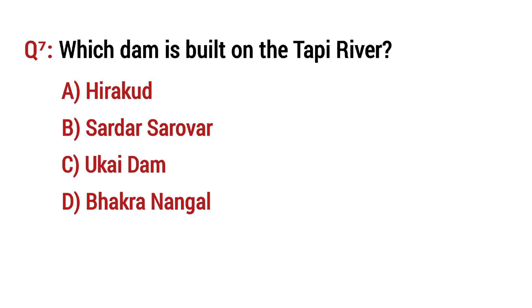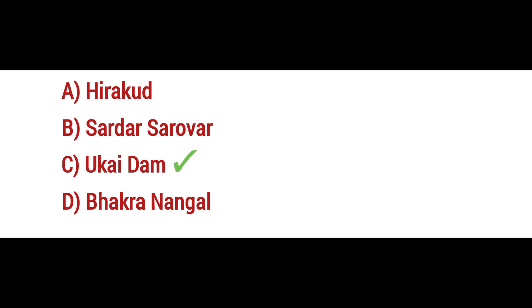Question number 7: Which city is built on the Tapti River? The right option is C: Ukai Dam.